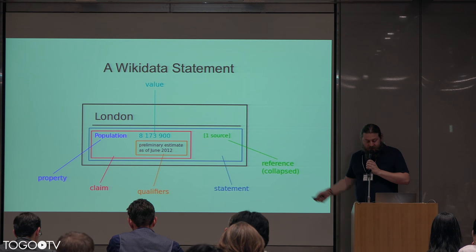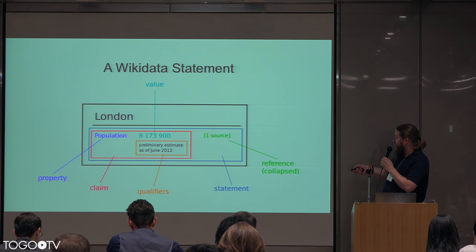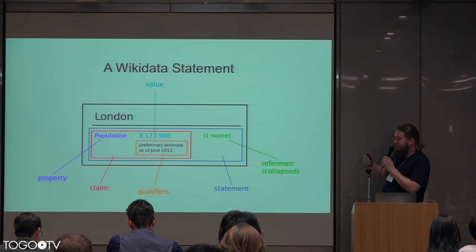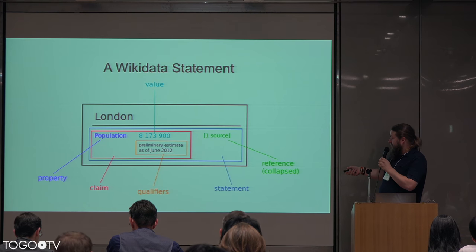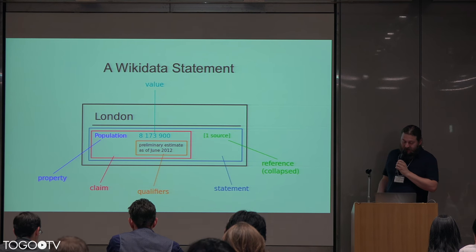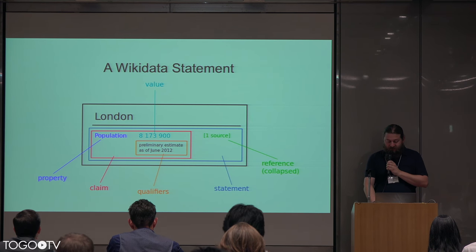The schema of a Wikidata item looks like this: you start out with a label — in this case it's London. Then this has a property called population with a value of 8 million. You have these property-value pairs. Then you can have qualifiers which modify these property-value pairs. The combination of that is called a claim — you claim something about reality. And in order to make the claim more solid, you can add references. The whole thing of a claim plus a supporting reference is called a statement. So you have a label, descriptions, and collections of property-value pair claims with a reference, and then it's a statement.